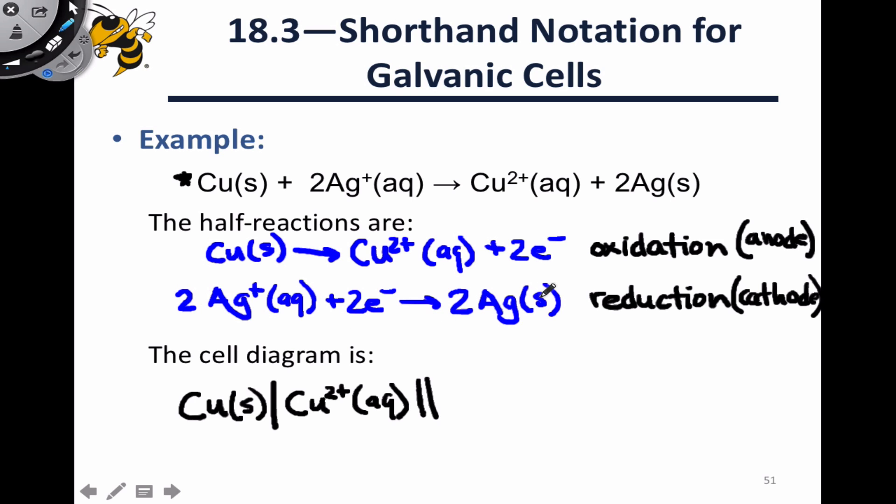The reactant within the reduction process is silver plus. We don't need to incorporate the two into this, that's actually implied based on the reactants in the cell notation. At any rate, Ag+ is an aqueous solution, and the product of reduction is silver solid, and here's our cell notation.